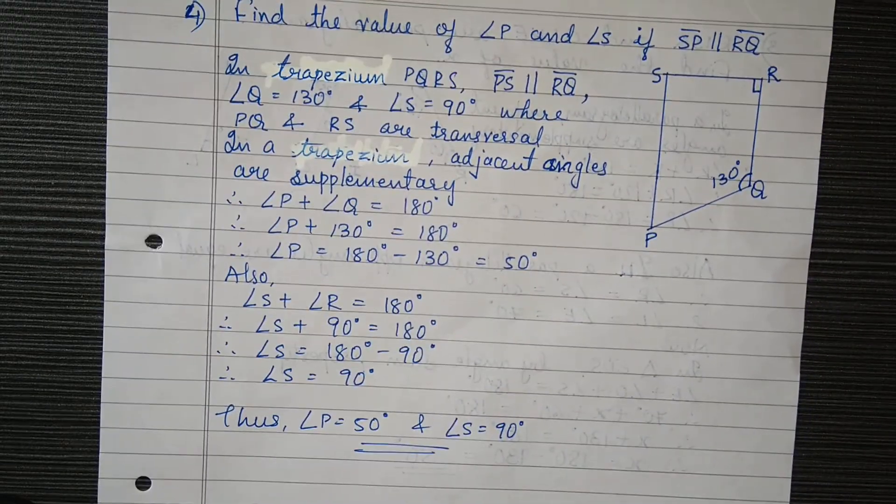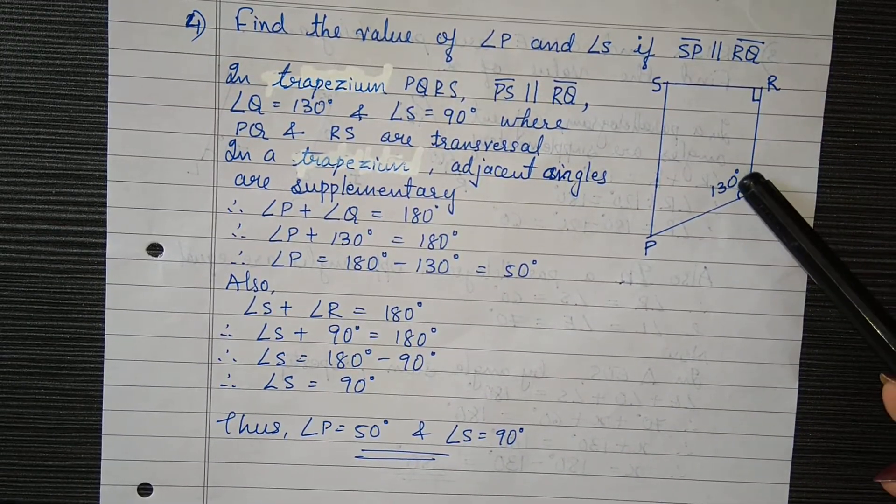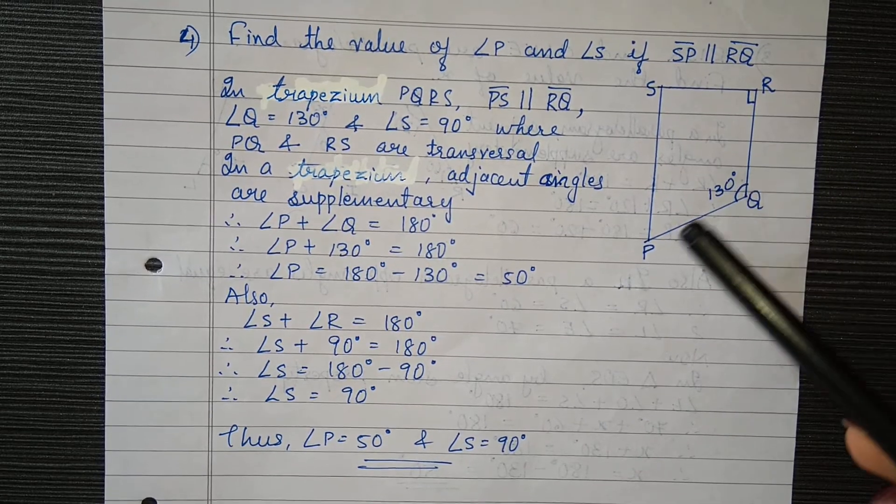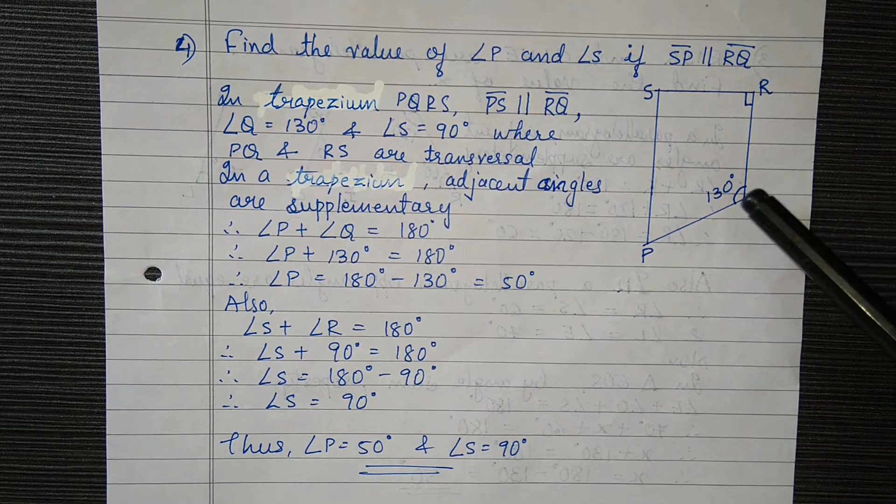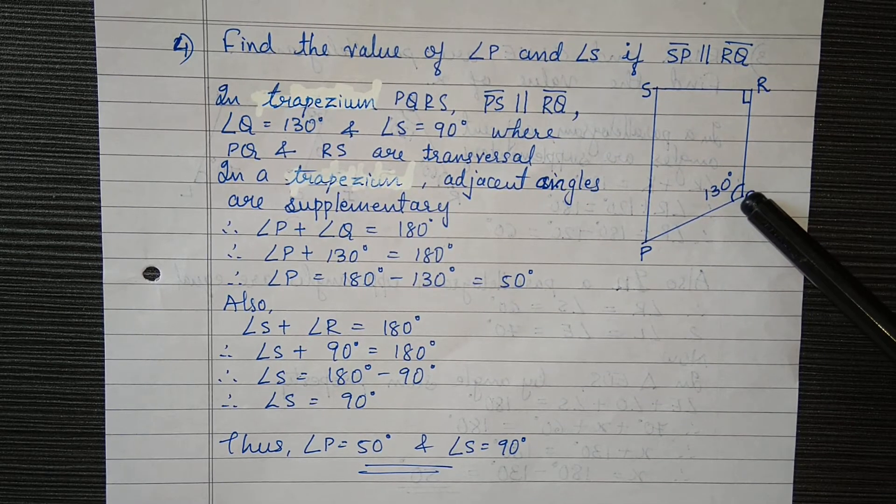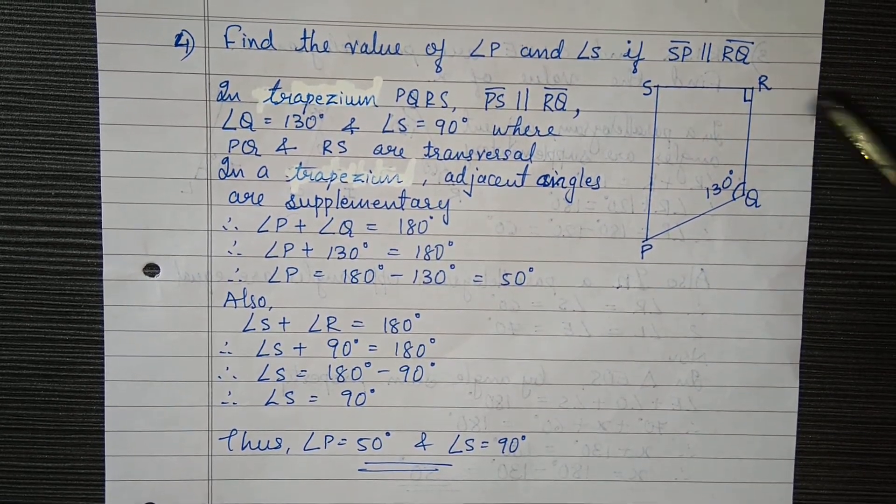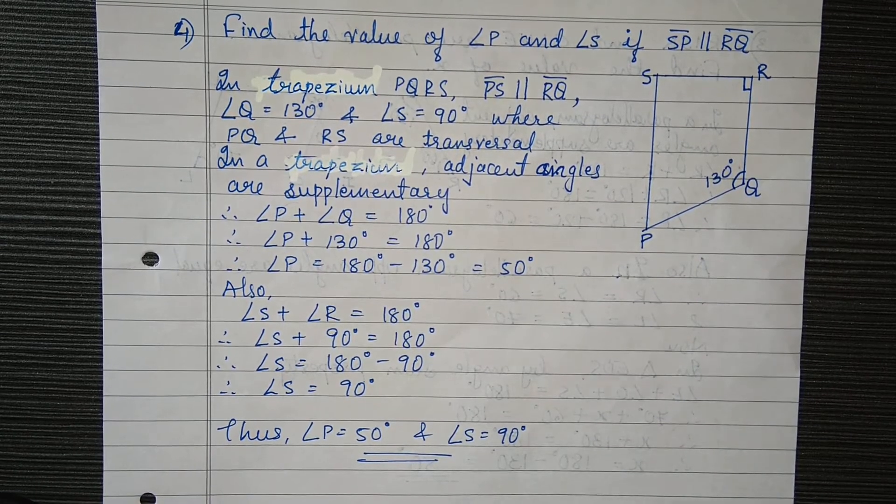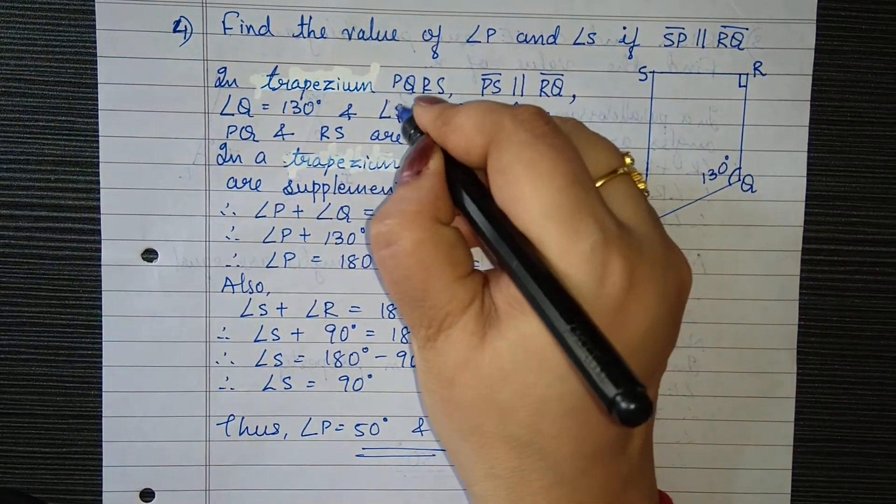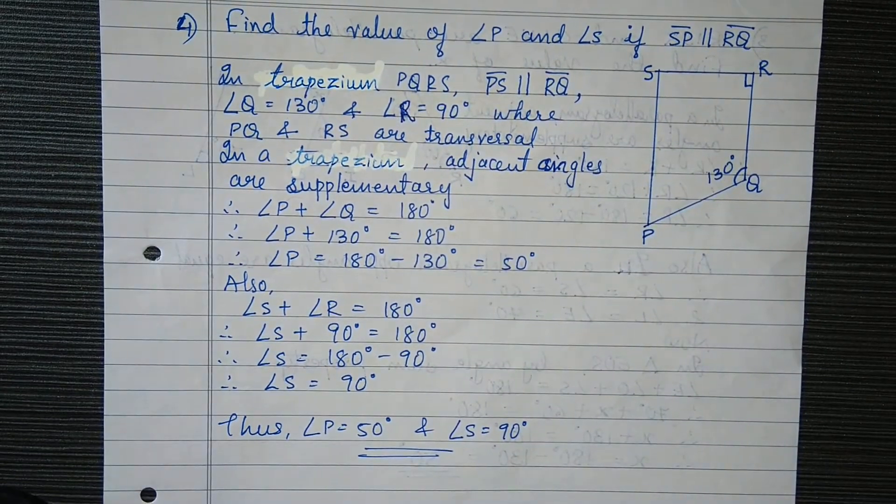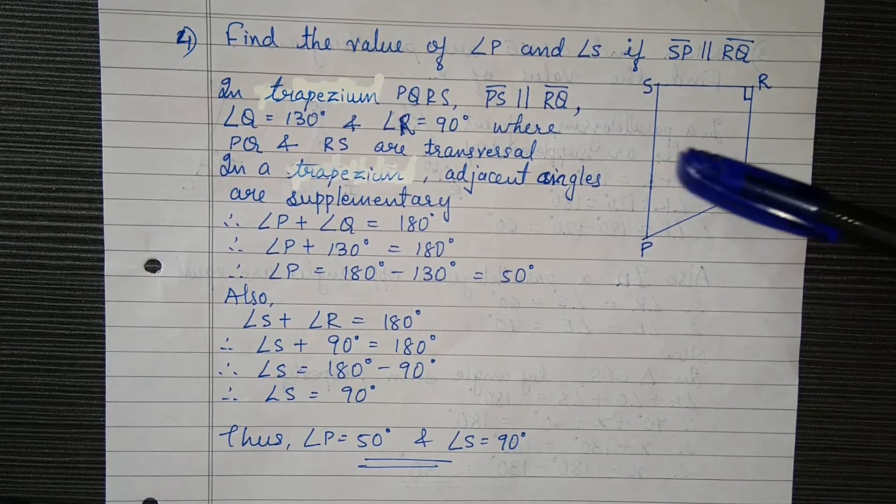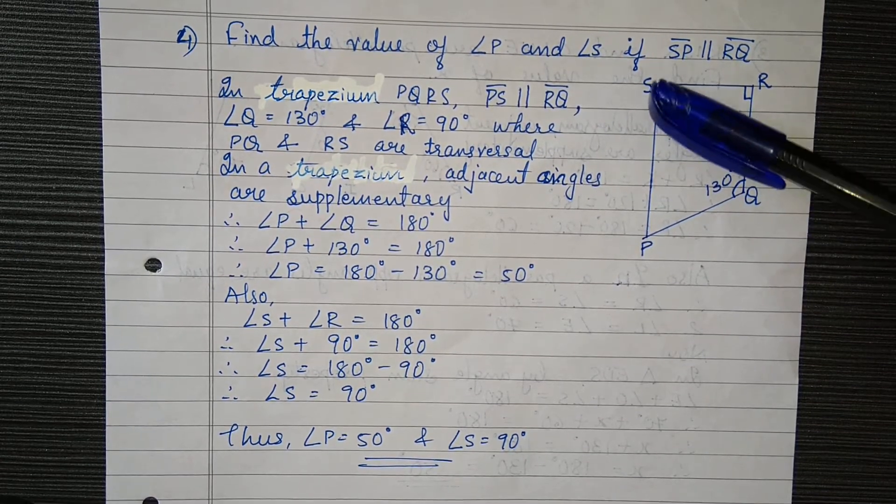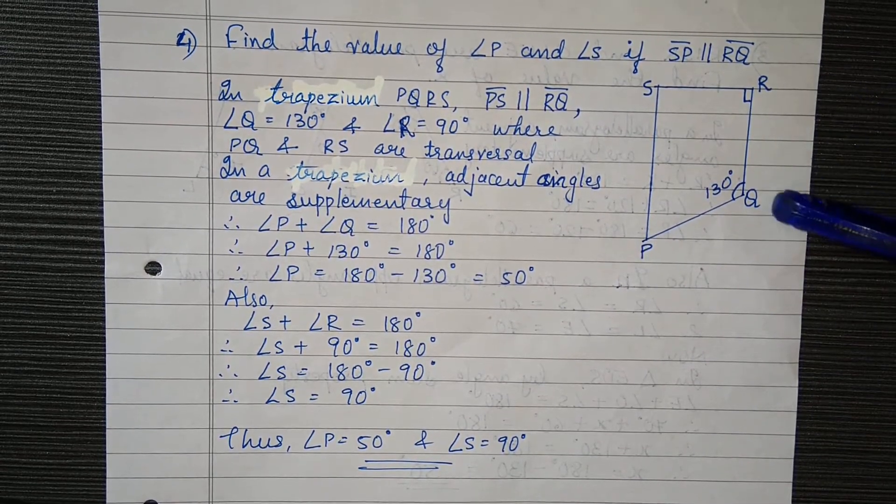Now the next type of question. Here we are given one trapezium PQRS. This trapezium has two angles: angle Q equal to 130 degrees and angle R equal to 90 degrees.